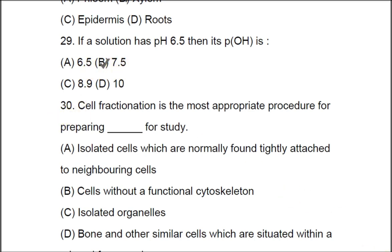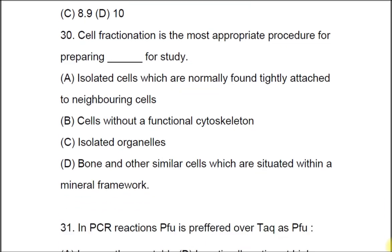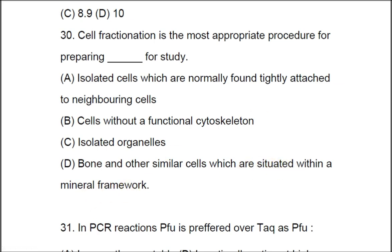Question 30: Cell fractionation is the most appropriate procedure for preparing dash for study. A) isolated cells normally found tightly attached to neighboring cells, B) cells without a functional cytoskeleton, C) isolated organelles, D) bone and other cells situated within a mineral framework. The correct option is C, isolated organelles.